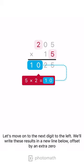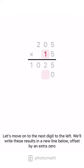Let's move on to the next digit to the left. We'll write these results in a new line below, offset by an extra 0.